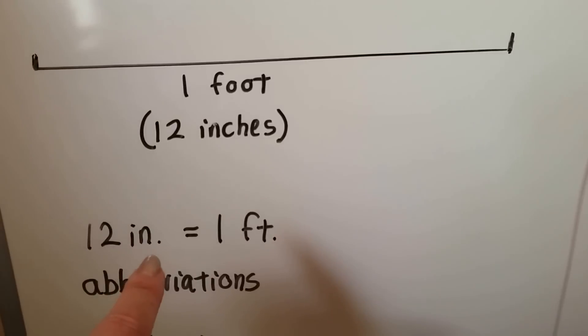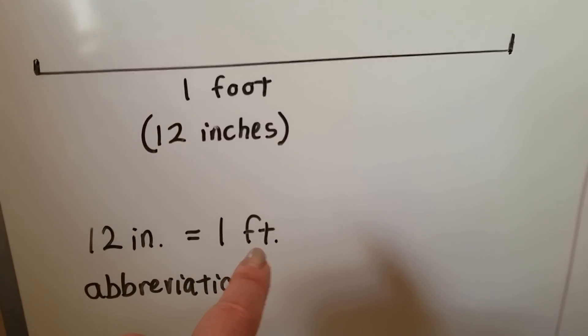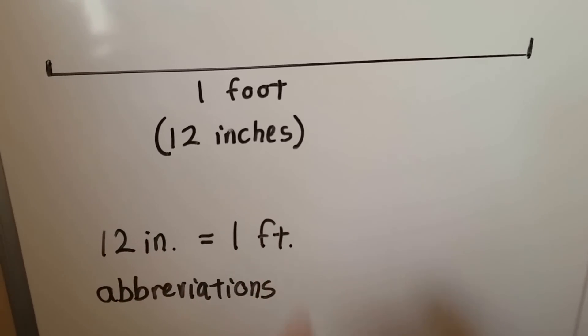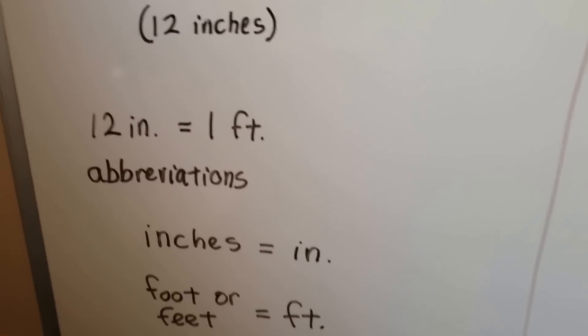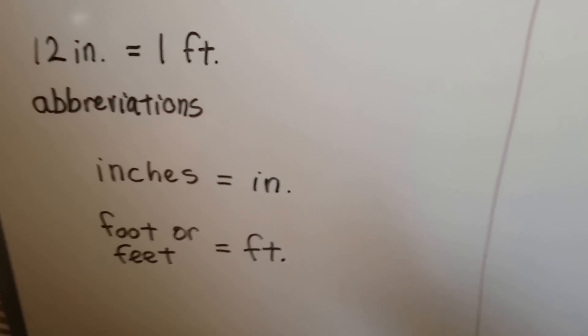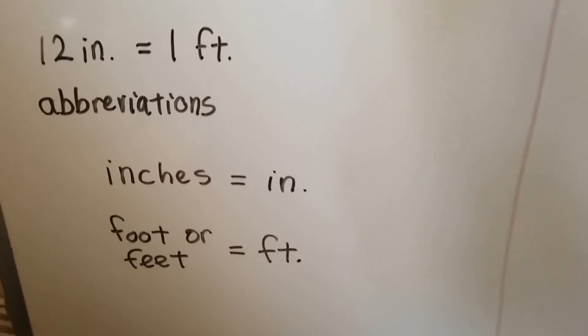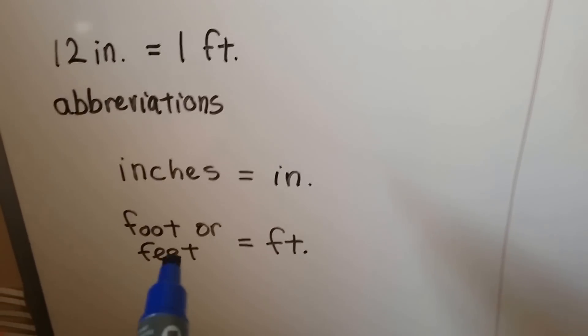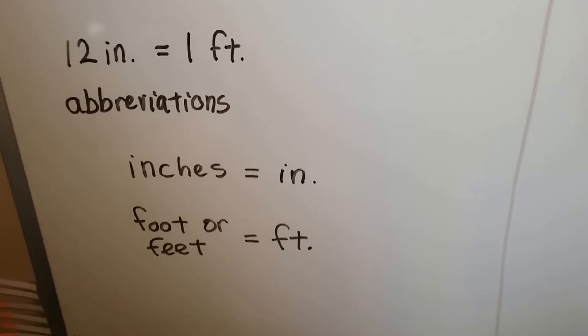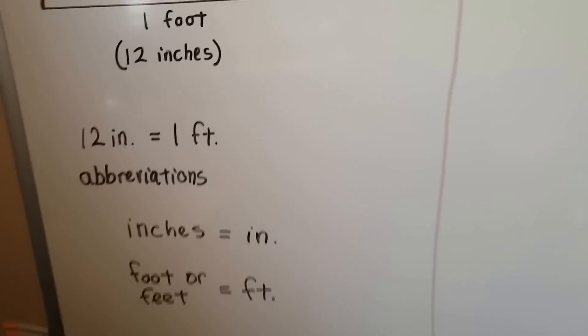We can write an IN period or an FT period for inches and feet. Those are abbreviations. It's a short way of writing it. Just remember if you see the IN period, it's a short way of saying inches. And if you see the FT period, it's just a short way of saying a foot or feet, depending on how many we have.